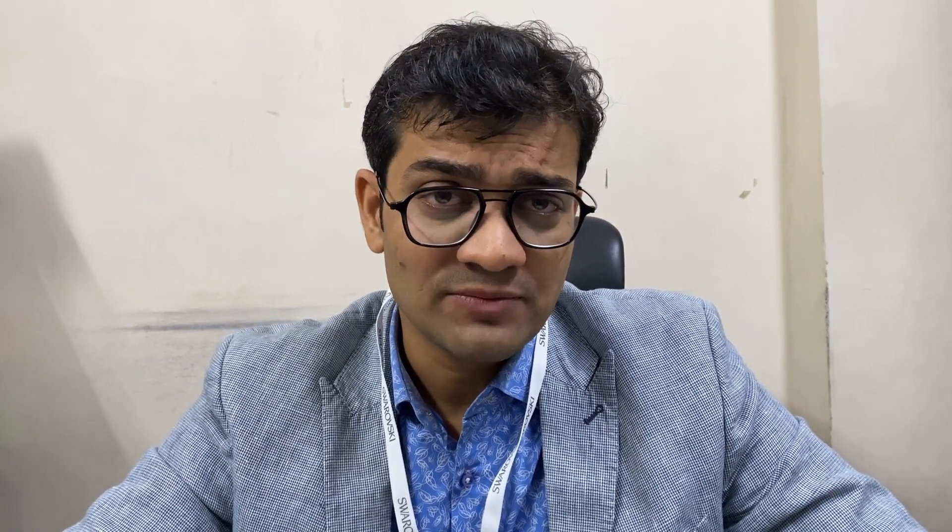The very first thing is carat. Carat is the most important parameter that determines any diamond's size. When we talk about size in carat weight, carat is nothing but a small fraction of weight measurement of a diamond. Normally, 1 carat is equal to 0.2 grams.